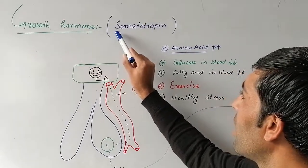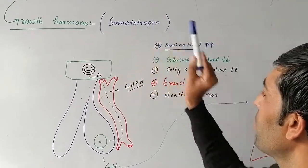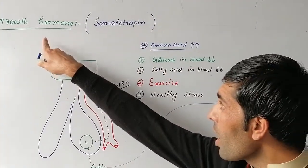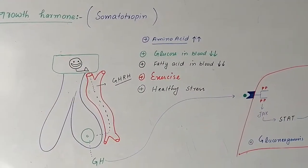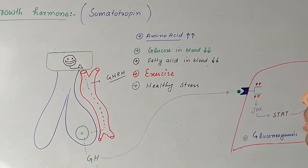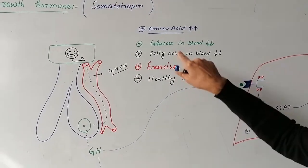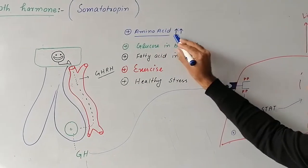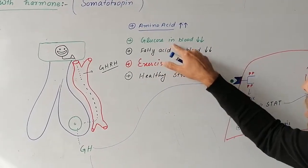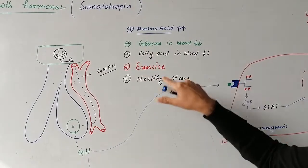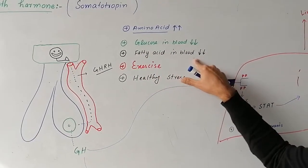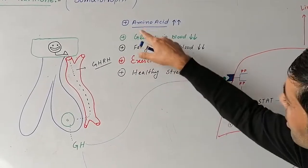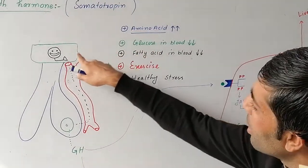Growth hormone is also called somatotrophin. The anterior pituitary gland secretes somatotrophin in response to high amino acid levels or decreased glucose level, decreased fatty acid level, exercise, or healthy stress.